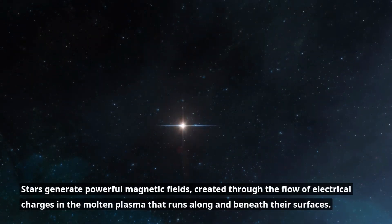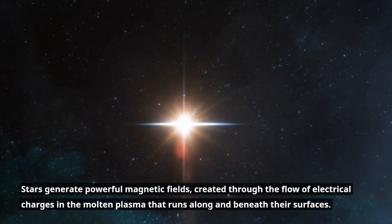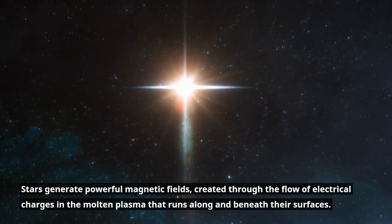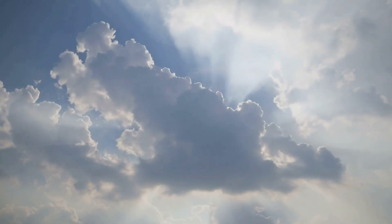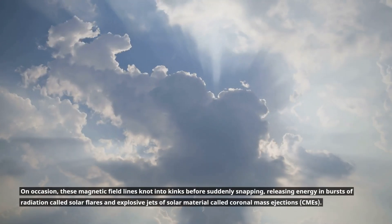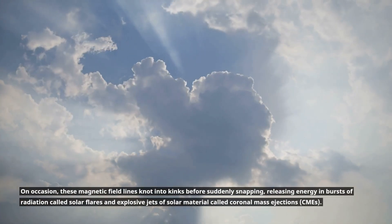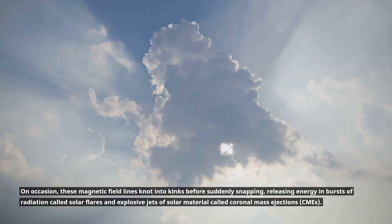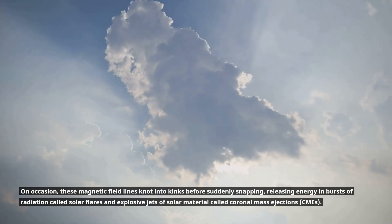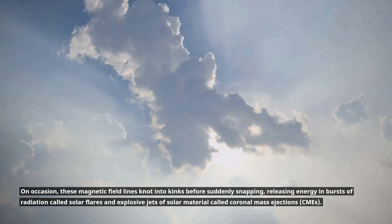Stars generate powerful magnetic fields, created through the flow of electrical charges in the molten plasma that runs along and beneath their surfaces. On occasion, these magnetic field lines nod into kinks before suddenly snapping, releasing energy in bursts of radiation called solar flares and explosive jets of solar material called coronal mass ejections.